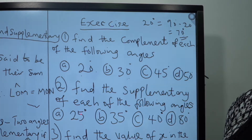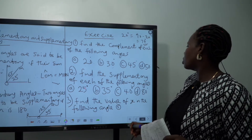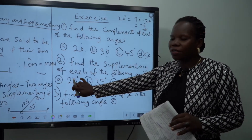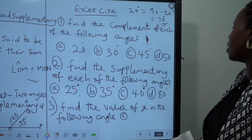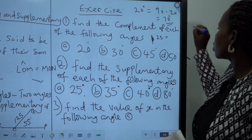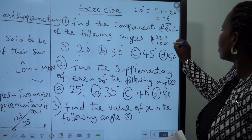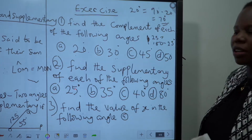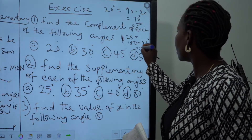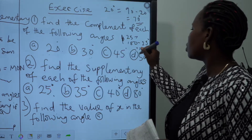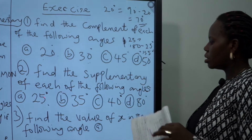Now finding the supplementary of each of the following: since supplementary angles sum to 180 degrees, for 25 degrees you calculate 180 minus 25, which gives us 155 degrees. So 155 degrees is the supplement of 25 degrees.